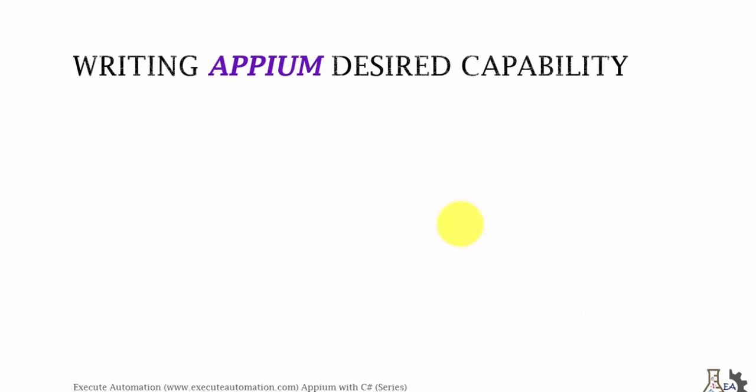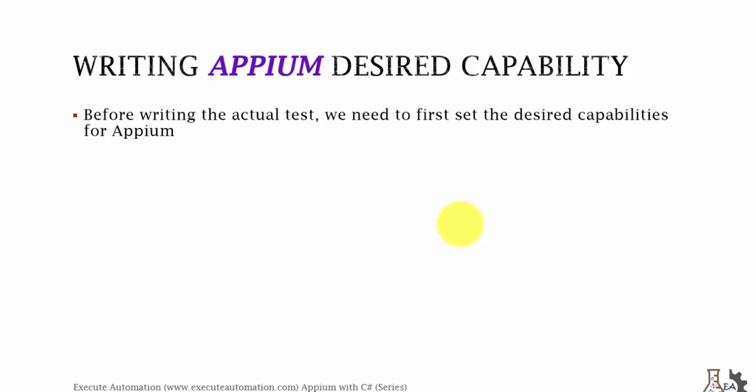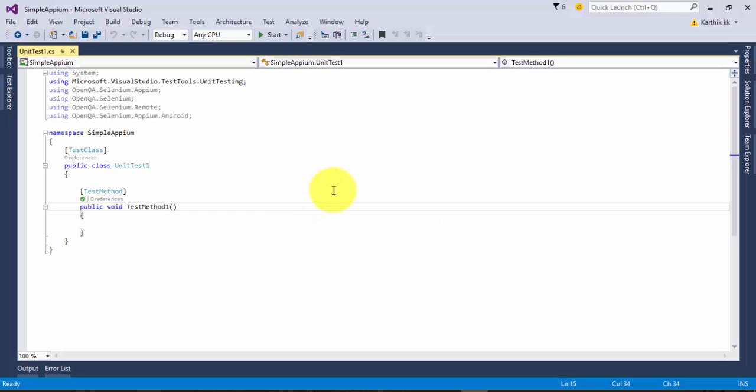Writing Appium's desired capabilities is our first task to perform before writing a simple test. We need to first set the desired capabilities for Appium, which we already know if you've watched the understanding Appium video series and the Appium with Java video series. I will also talk about the code changes between Appium with C# and Appium with Java.